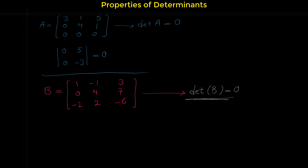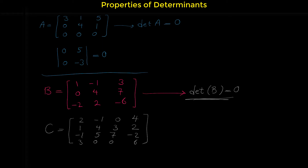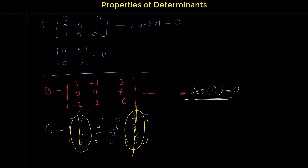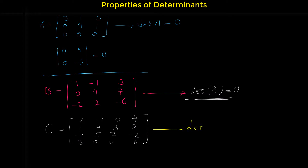Let me show another example. Consider matrix C: 2, −1, 0, 4 / 1, 4, 3, 2 / −1, 5, 7, −2 / 3, 0, 0, 6. In this matrix, the fourth column is a multiple of the first column — multiply the first column by 2: 2×2=4, 1×2=2, (−1)×2=−2, 3×2=6. So the determinant of this 4×4 matrix is 0.